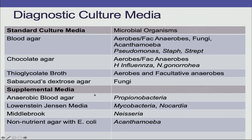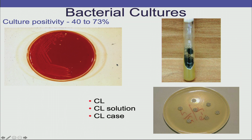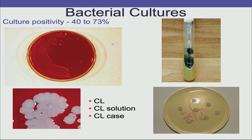The standard culture media used is blood agar and chocolate agar. If fungus is suspected, always send for Sabouraud dextrose agar. In recalcitrant infections, LJ media is used for mycobacteria and non-nutrient agar with E. coli for Acanthamoeba. Culture positivity rate for bacterial keratitis is 40 to 73%. Everything related to the ulcer — suture, contact lens, contact lens solution, or contact lens case — should be sent for culture and sensitivity.